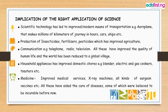In household appliances, there are improvements in blenders, electric and gas cookers, toasters, washing machines, and vacuum cleaners — a huge list of household equipment developed by science to help make housework quite easy. And in the area of medicine, we have improved medical services, X-ray machines, and all kinds of surgical procedures and vaccines, which have aided the cure of diseases, some of which were believed to be incurable before now.